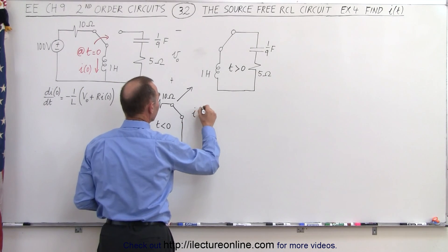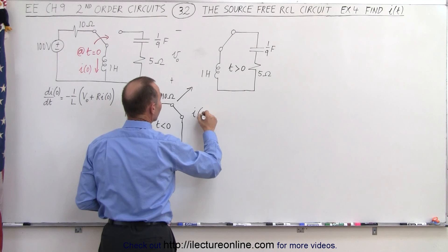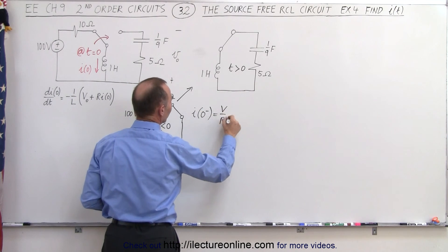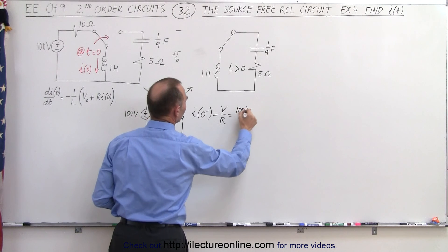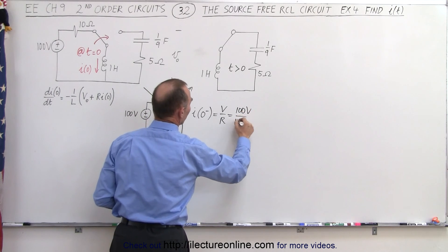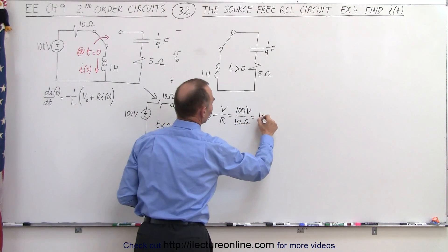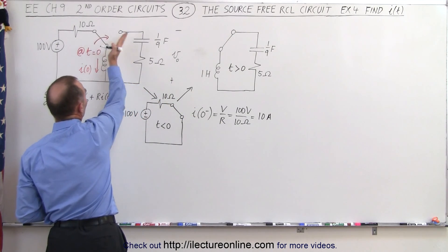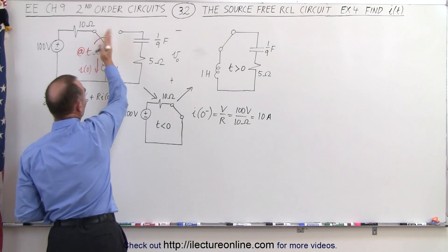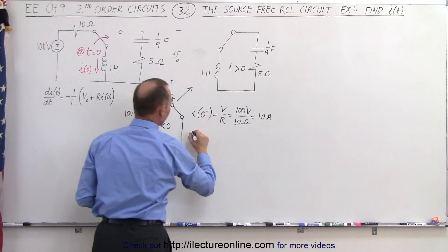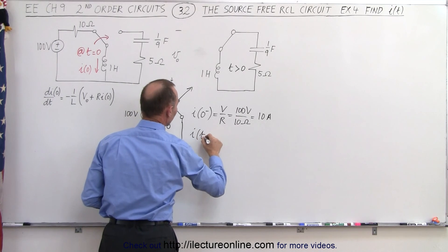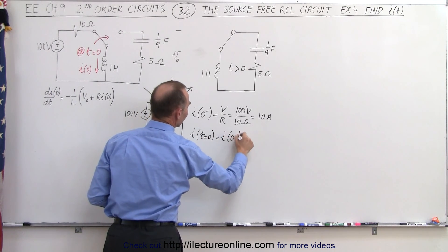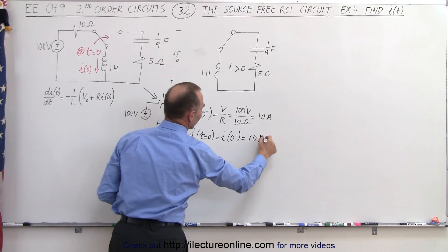We can say that the initial current I, when time is less than zero, is equal to voltage divided by resistance, which is 100 volts divided by 10 ohms, which equals 10 amps. The initial current seen in the circuit after the switch goes to a different position — I when t equals zero — will be the same as I when time was less than zero, which is 10 amps.